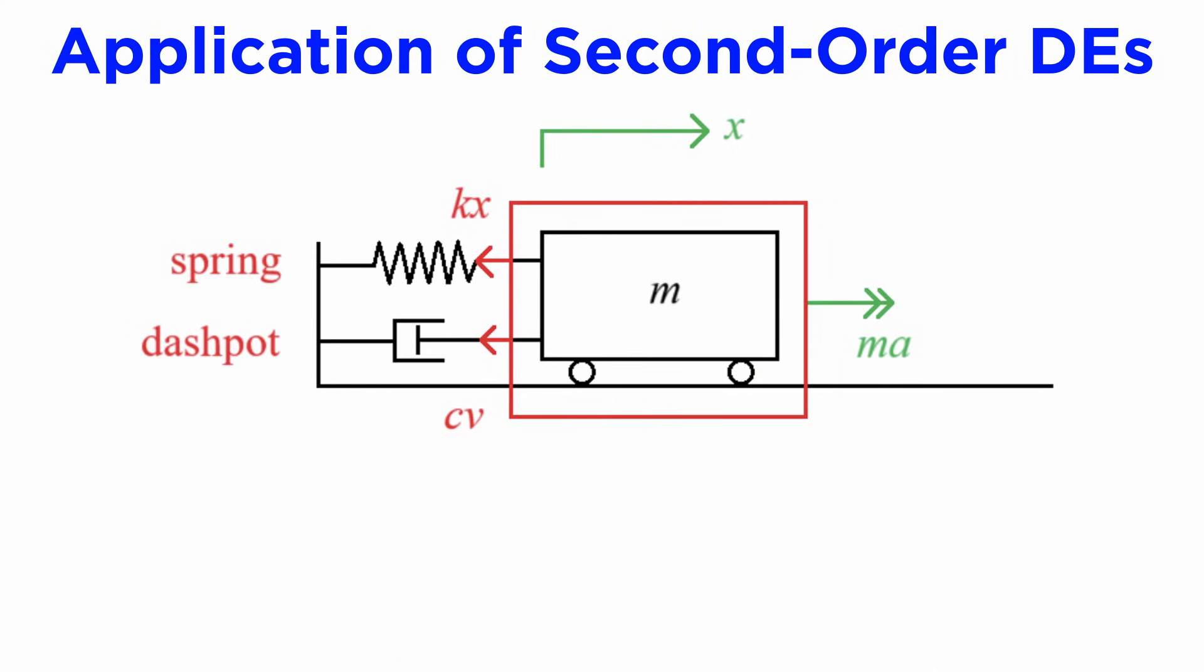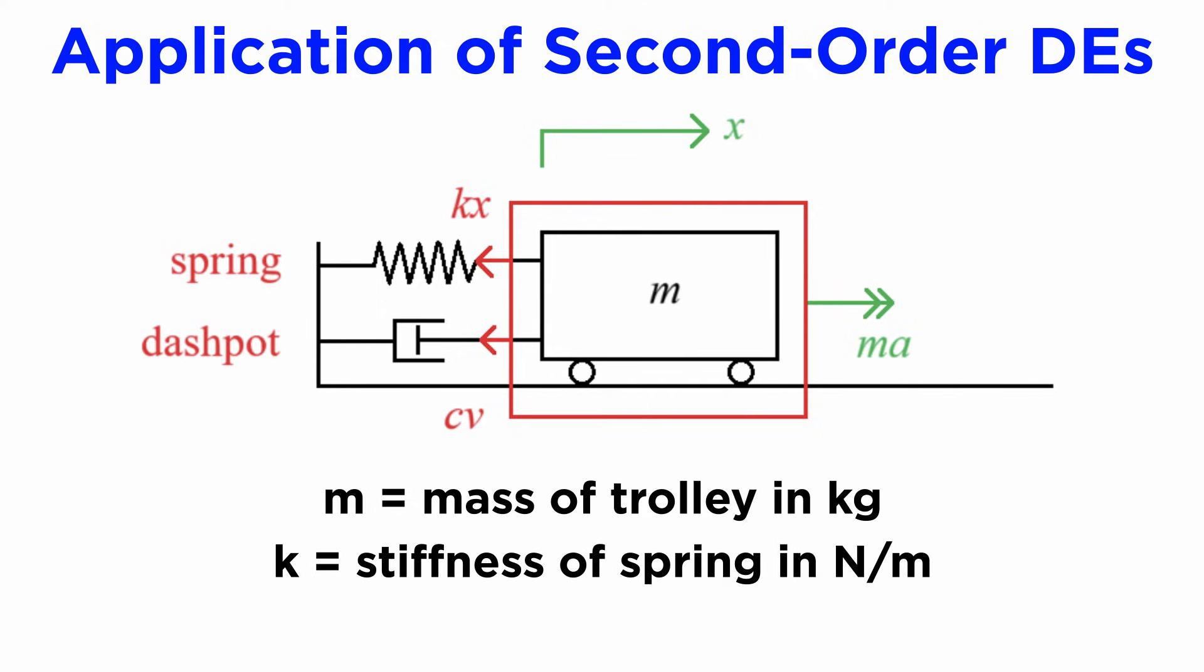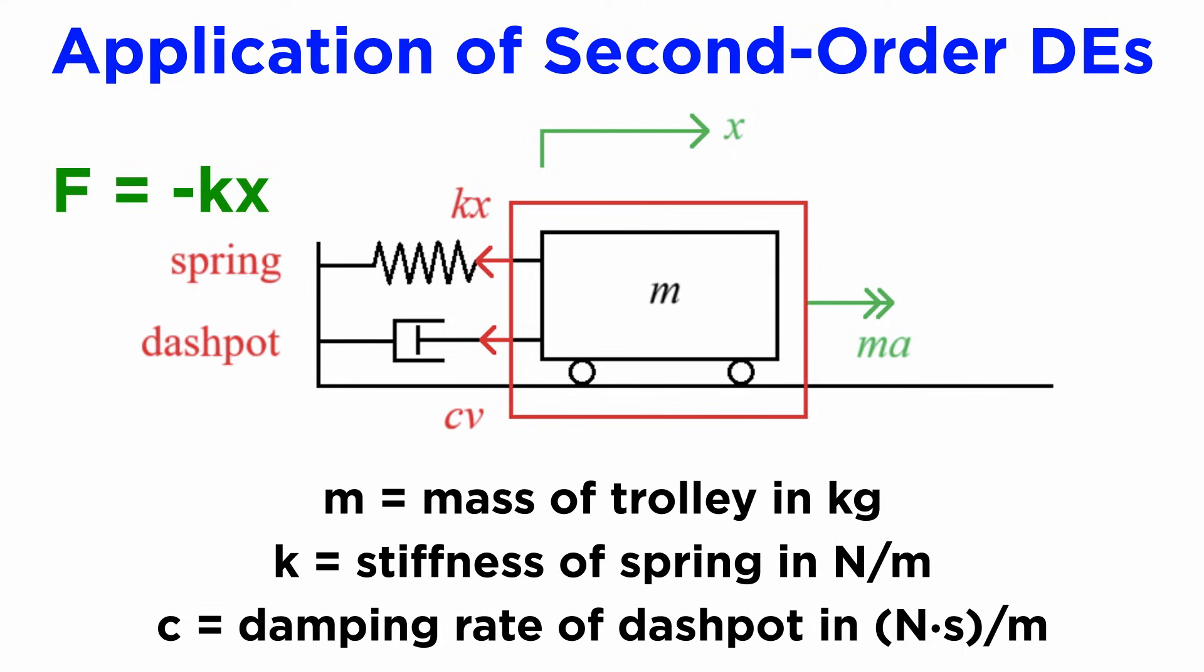Let's wrap up this section with an application that you will become very familiar with if you go on to use differential equations in a physics or engineering context. Suppose that we have a trolley of mass m kilograms sliding on frictionless horizontal rails. Attached to the trolley is a spring with a stiffness k newtons per meter, as well as a dashpot with a damping rate of c newton seconds per meter. We know that springs exert elastic forces, given by F equals negative kx, according to Hooke's law, where x is the extension or displacement, but what is a dashpot?